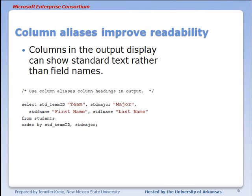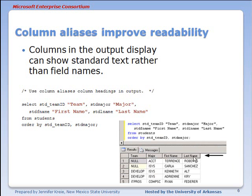Another way to improve readability is to use column aliases rather than having the actual column or field name displayed, which often times is abbreviated and can be fairly esoteric. So here we're going to display student team, major, first name, and last name, but after each field in double quotes we've put text that we actually want to display as column headings. We see that in our output when we run this query in SQL Server Management Studio.